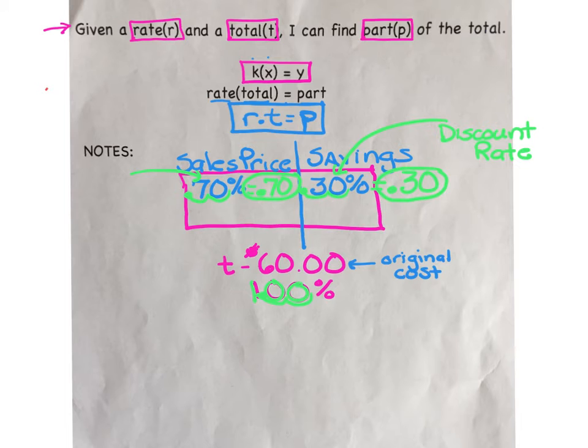We're going to calculate how many dollars we save on this particular jacket, and we're going to calculate how many dollars we spend. Think of it this way: 60 is our total amount. Part of that 60 you get to save, part of that 60 dollars you have to spend on the cost or the sale price of the jacket.